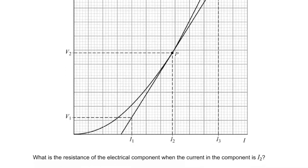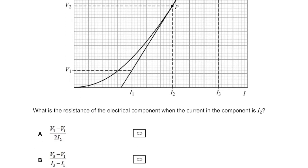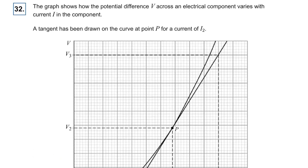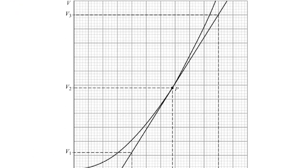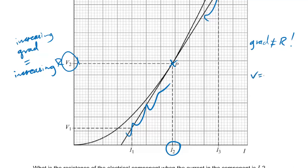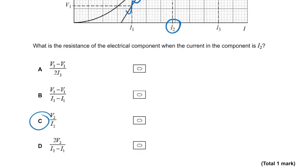Question thirty-two: given V and I on a graph, what is the resistance? This is a common misconception — the gradient of a VI graph does not equal the resistance. Ignore tangents. What matters is the specific point: R equals V over I at that point, so R equals V2 over I2. The answer is C.